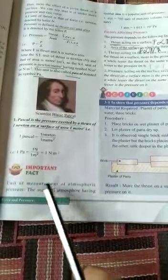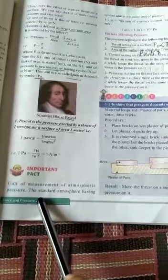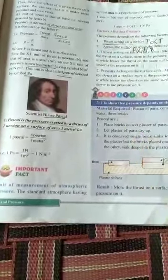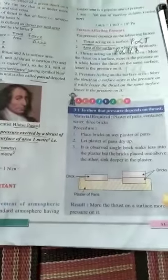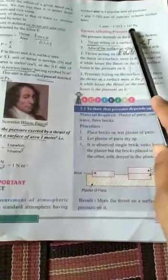Next is regarding the unit of measurement of atmospheric pressure. Atm is the popular unit of atmospheric pressure. 1 atm is equal to 760 mm of mercury, Hg. 1 atm is equal to 1.013 into 10 raised to power 5 Pascal.